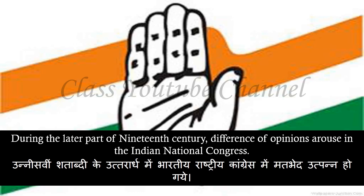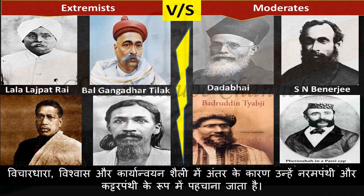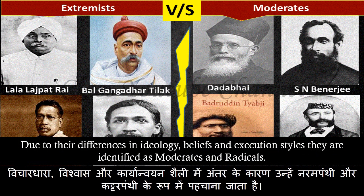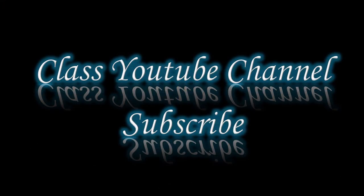During the later part of the 19th century, differences of opinion arose in the Indian National Congress. Due to their differences in ideology, beliefs, and execution styles, they are identified as moderates and radicals.